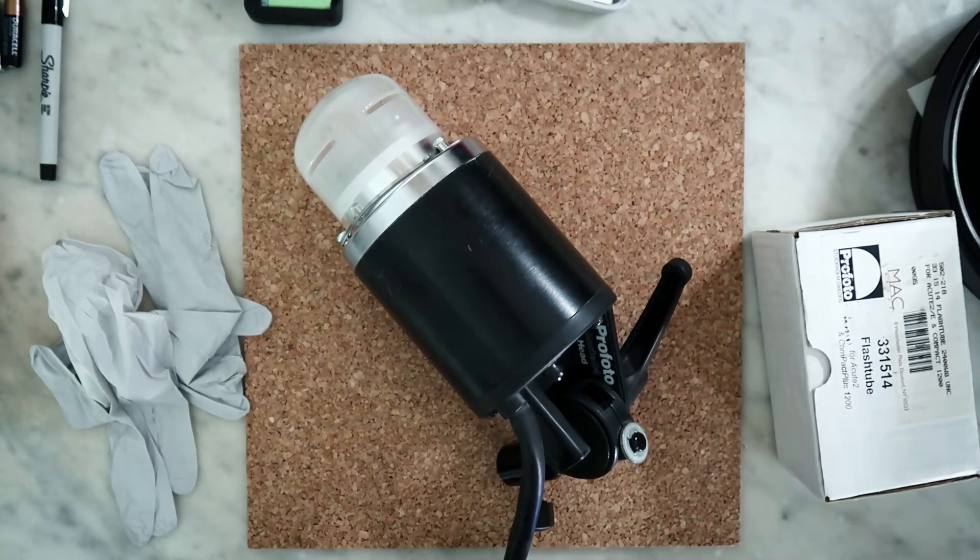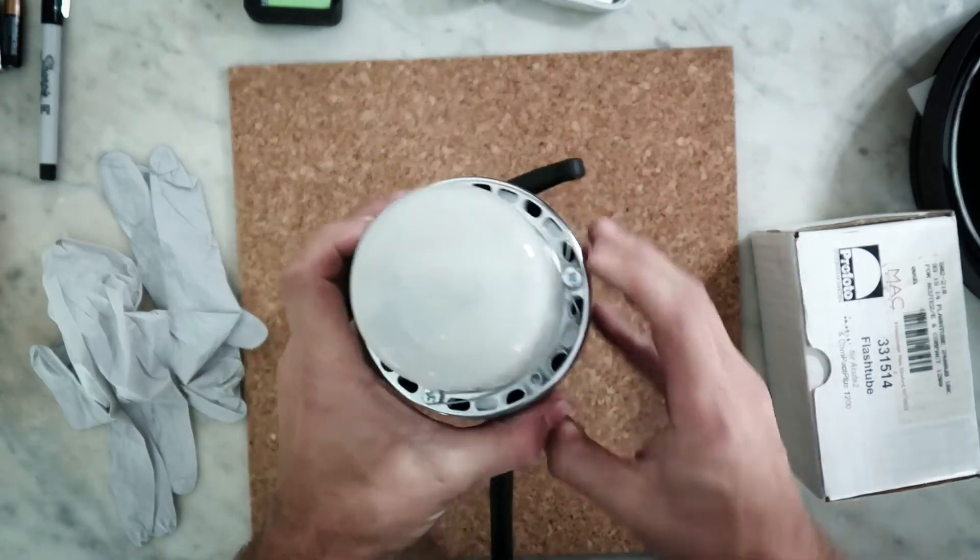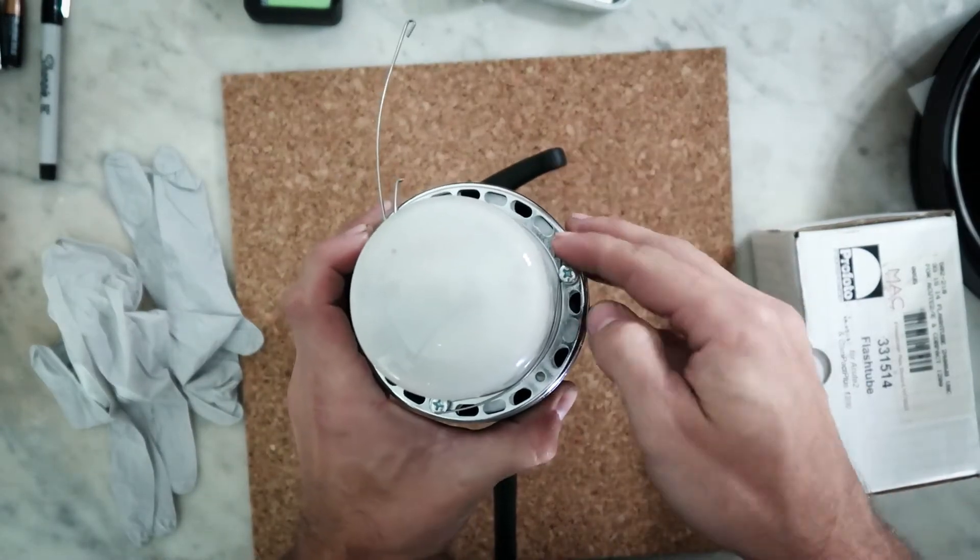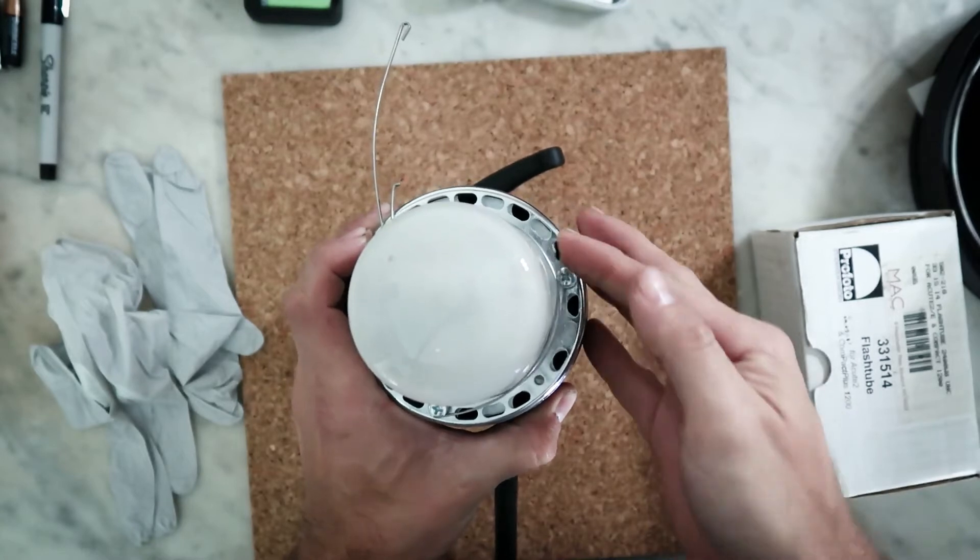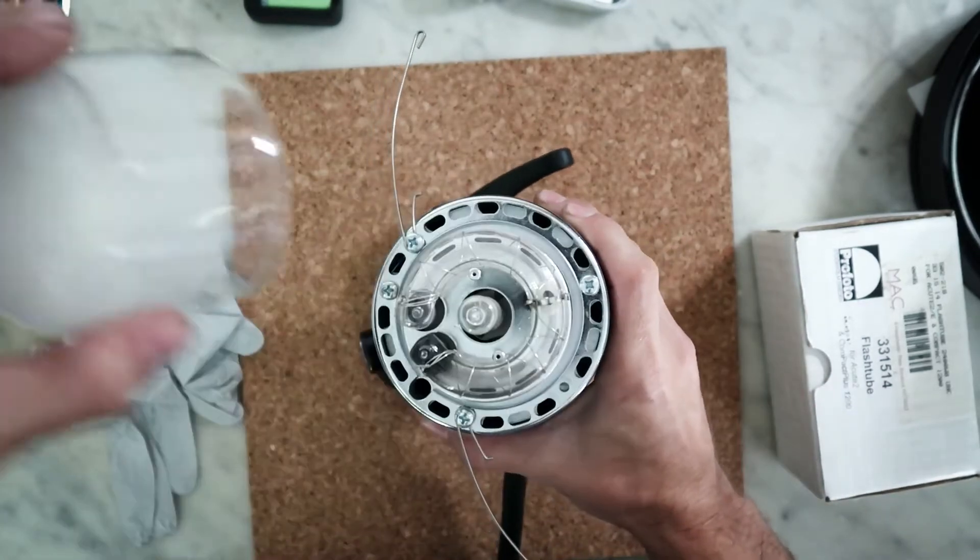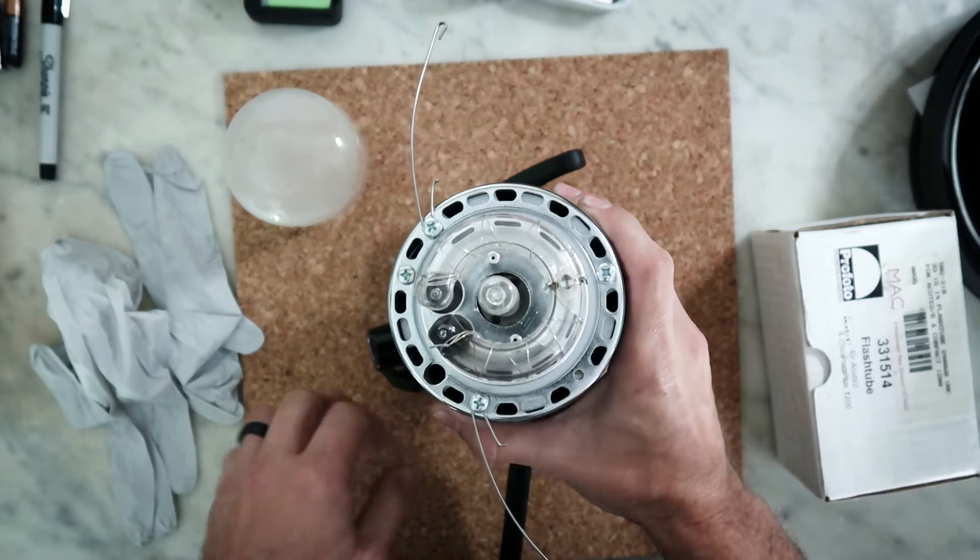So if you've got some ProPhoto lights like I do, you have these two little spring clips on either side of the dome. They pop off pretty easily and then here you've got your modeling lamp and your flash tube.